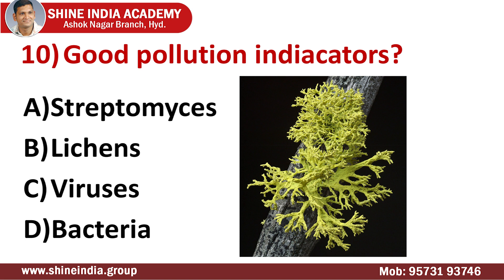Question number ten: good pollution indicators. Here we have lichens. Lichens are regarded as pollution indicators because they are highly sensitive to air pollution and die off rapidly in dirty air. Specifically, lichens are sensitive to sulfur dioxide and do not grow in polluted areas. In simple words, their presence indicates the absence of pollution in an area, and their absence indicates that the area is polluted.